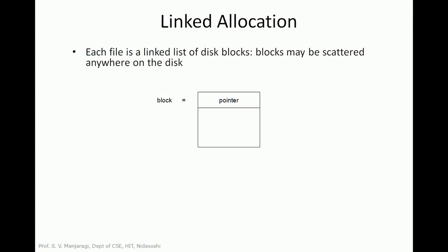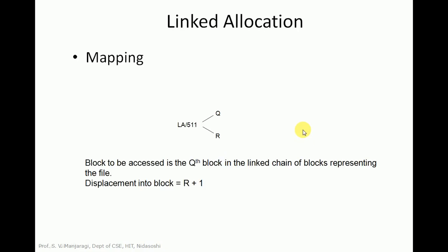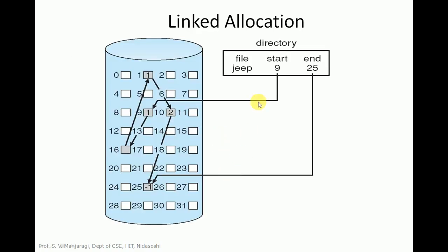In linked allocation, there is a pointer pointing to a data block on disk. Each file is a linked list of disk data blocks and blocks can be scattered anywhere on the disk. A pointer in each node points to the next data block on the disk. The displacement into the block is represented as r, so the displacement is r+1.